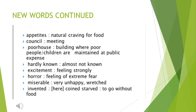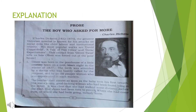'Poor house' is a building where poor people or children are maintained at public expense — where some orphans are taken care of. 'Hardly known' means almost not known. 'Excitement' is feeling strongly. 'Horror' is a feeling of extreme fear. 'Miserable' means very unhappy or wretched. 'Invented' here means coined. 'Starve' means to go without food. You can refer to page number 60 in your textbook.